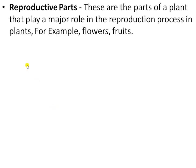Next is the reproductive part. These parts of a plant also play a major role in the reproduction process — for example, making a flower or making a fruit from the plant. In asexual reproduction, new plants are formed from the vegetative parts like roots, stems, or leaves. In the reproductive part, new plants are formed from the seed of the plant or the flower of the fruit — these are the reproductive organs that produce the seed.